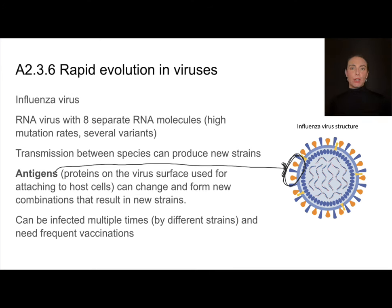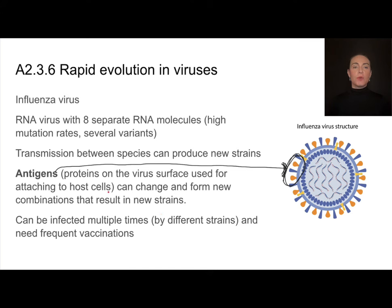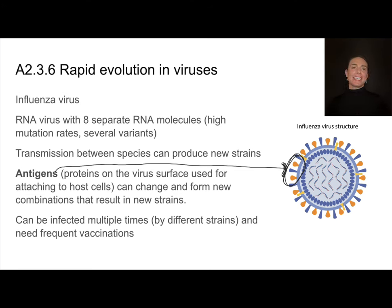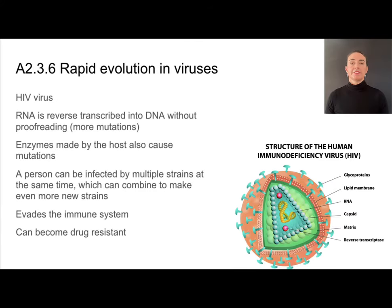A new strain may be able to be transmitted between species, and it also means you can be infected multiple times because every new strain is able to evade your immune system. That's why flu shots only last one year — the vaccination needs to be given every year and only protects against certain strains. If the virus mutates and produces a new strain, it renders the vaccine ineffective against that strain.